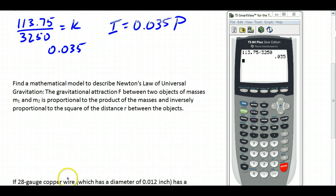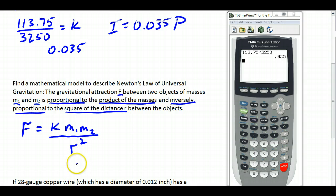How about this? Find a mathematical model to describe Newton's law of universal gravitation. The gravitational attraction F between two objects of masses M1 and M2 is proportional to—that's the same thing as direct variation—is proportional to the product of the masses. So F is proportional to, that's K, M1 times M2, their product, and inversely proportional to, so we're going to divide by the square of the distance R. That's it. That's Newton's law of universal gravitation.